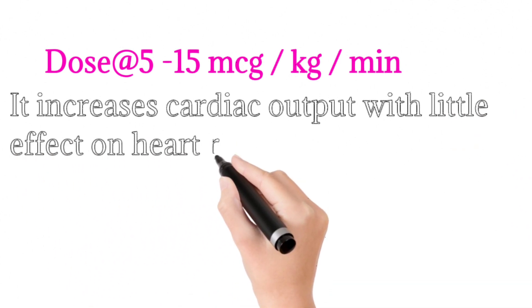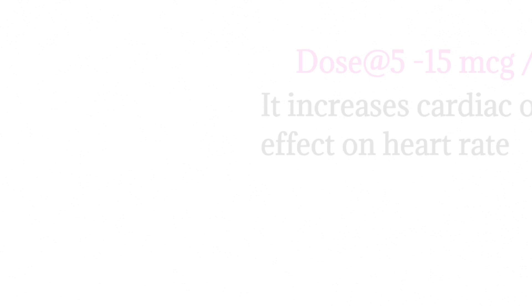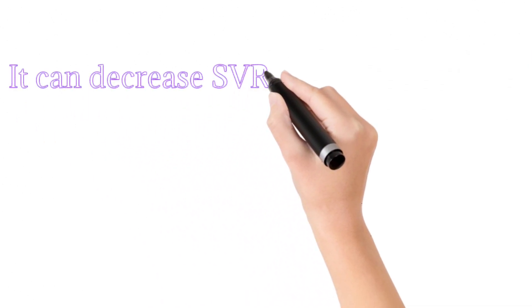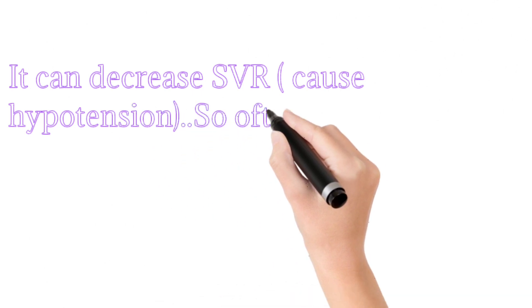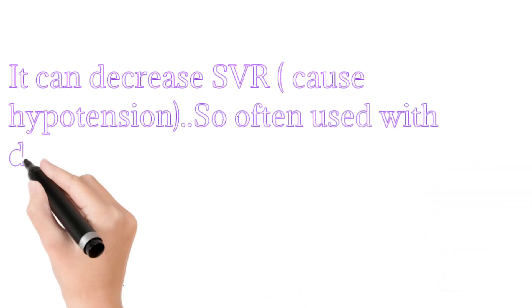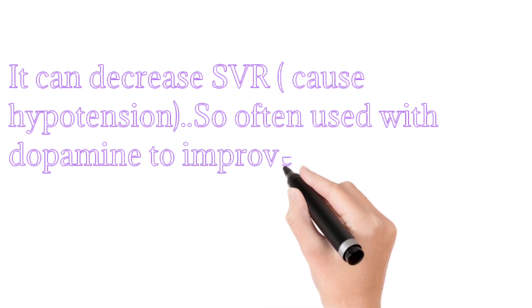Dobutamine can decrease SVR, which can cause hypotension, so it is often used with dopamine to improve cardiac output in cases of decreased myocardial function.